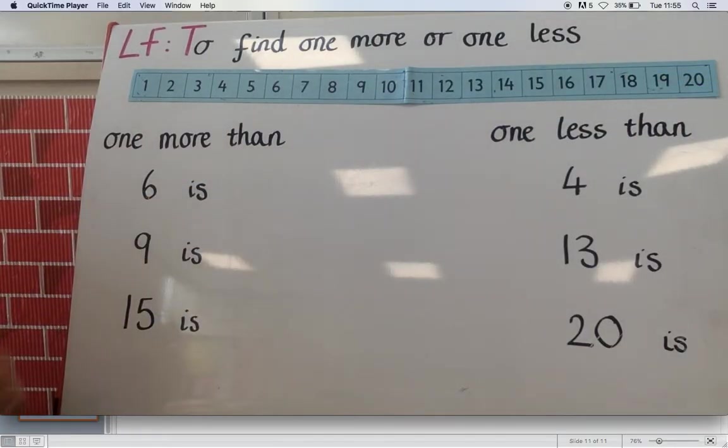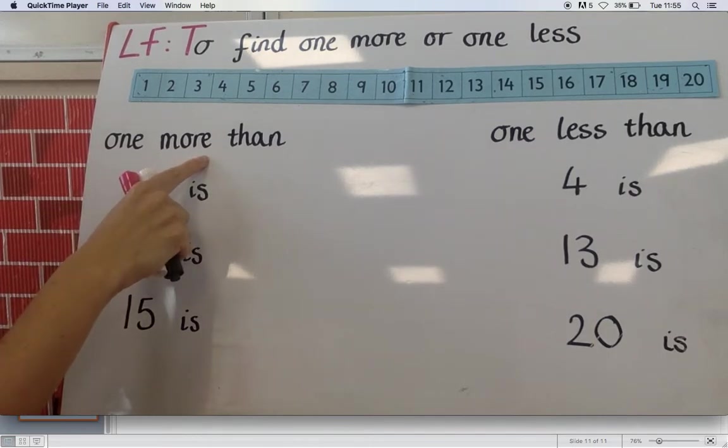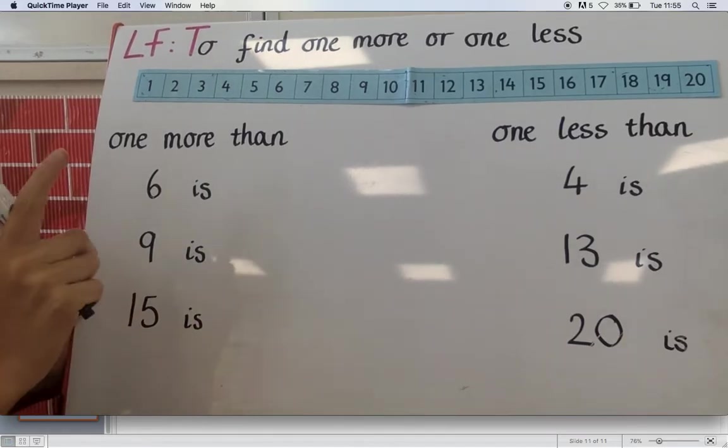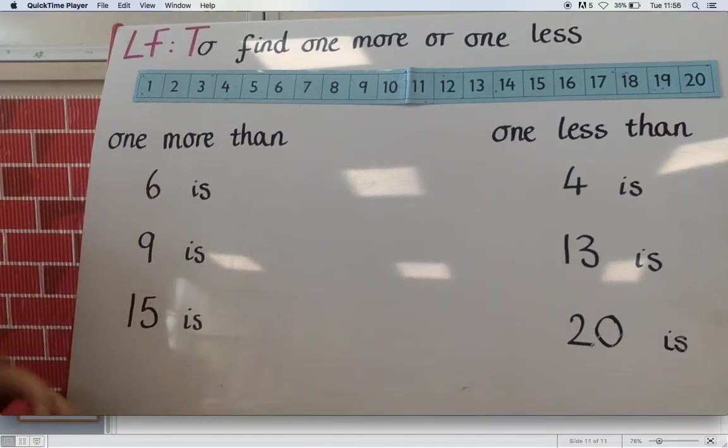Now I want to find one more than and one less than. Now more we know it means a greater number. It's going to be bigger. Less than it means it's going to be smaller.